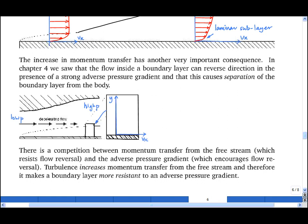When this happens, the velocity profile in the boundary layer looks like this, the key point here being the flow reversal in this region. In this situation, there is a competition between momentum diffusing down from the free stream, which resists flow reversal, and the adverse pressure gradient, which encourages flow reversal.